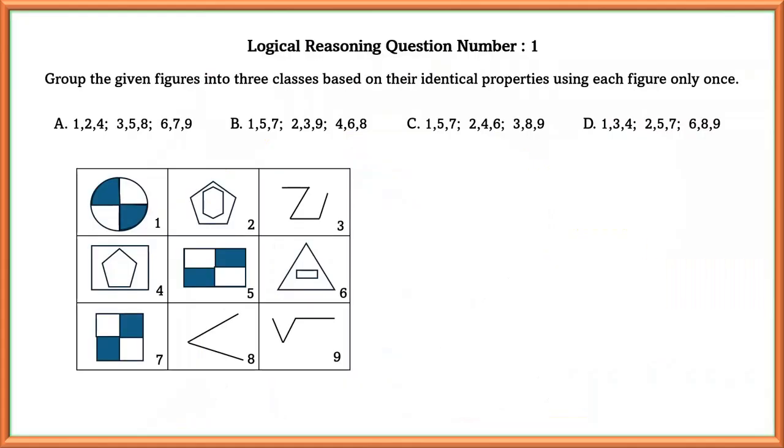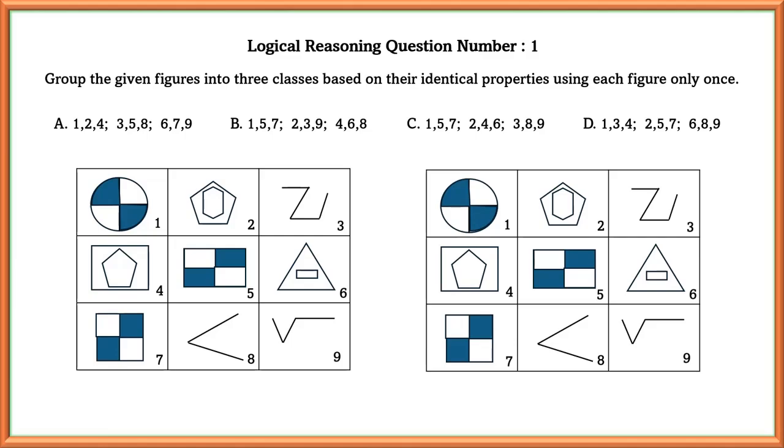Logical reasoning question number 1. Group the given figures into 3 classes based on their identical properties using each figure only once. As we can see here, there are 3 figures where there are shaded parts. So we can group them into 1 class.